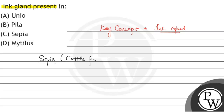Sepia contains a large ink gland which opens into the rectum. So it contains a large ink gland, and this ink gland opens into the rectum.